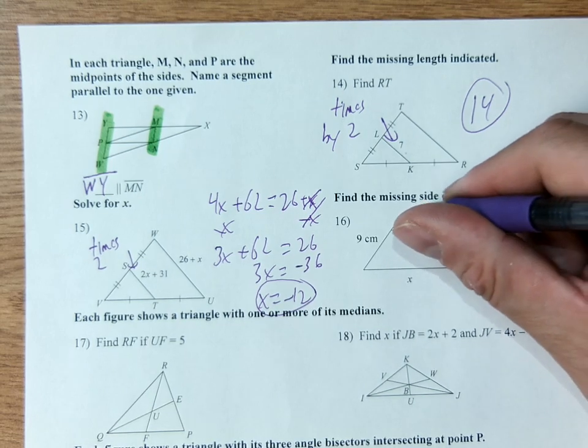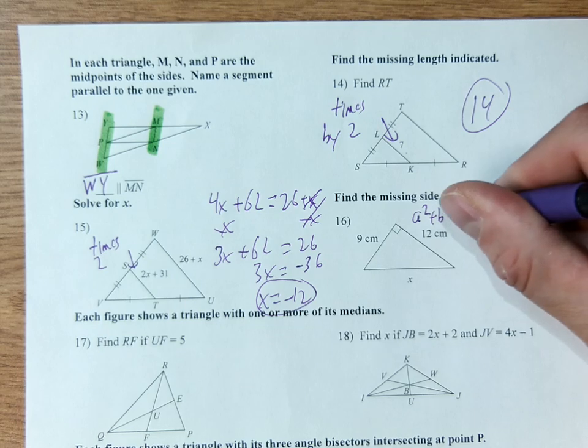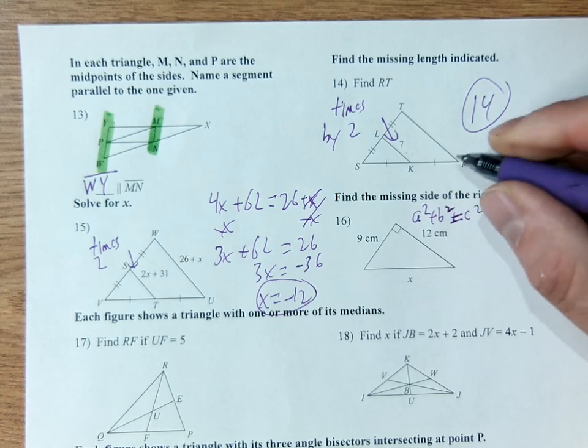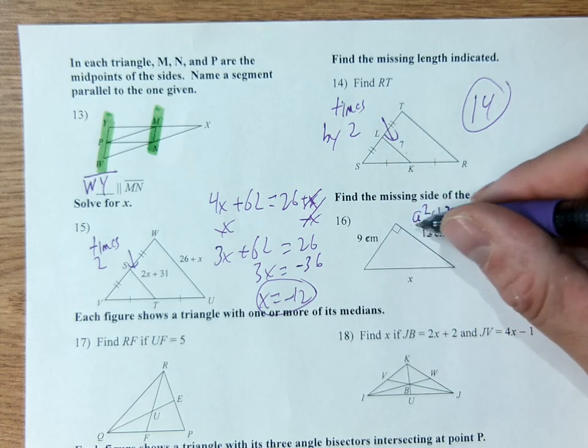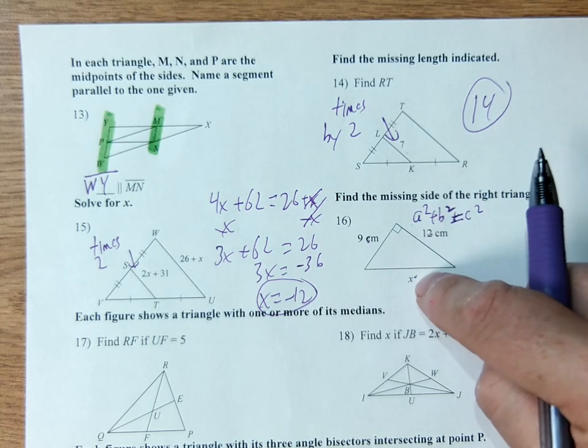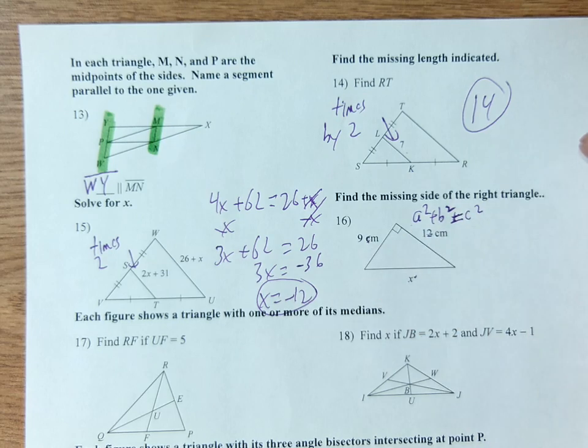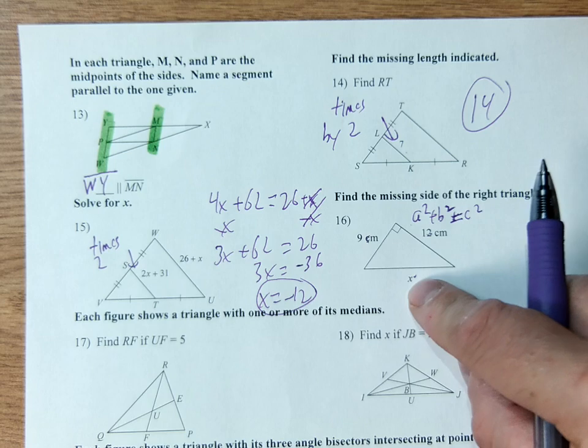Pythagorean theorem. I'll put this up on the board for you. A squared plus B squared equals C squared. A and B are the legs. These are legs. This is hypotenuse. Make sure you do it right. I might give you the hypotenuse and ask you for one of the legs.